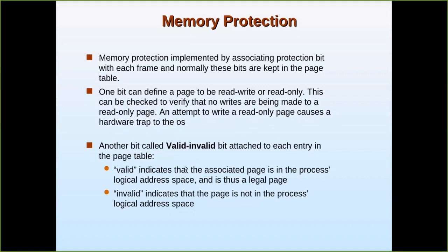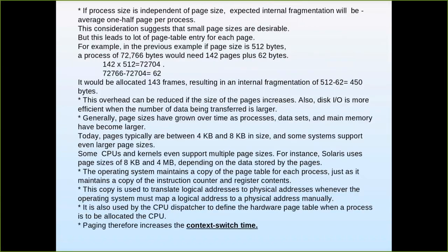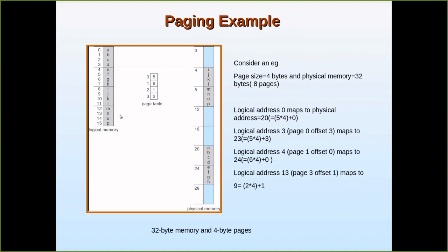Along with the read-only or read-write bit, another bit is also present called the valid or invalid bit. For example, consider a user process consisting of four pages — the page table will have four entries with their respective frame numbers. All pages of a particular process must be loaded into main memory. If there is no space for even one page, the whole process cannot enter main memory. This is a restriction in paging — the entire process must reside in main memory, though not necessarily in contiguous locations.